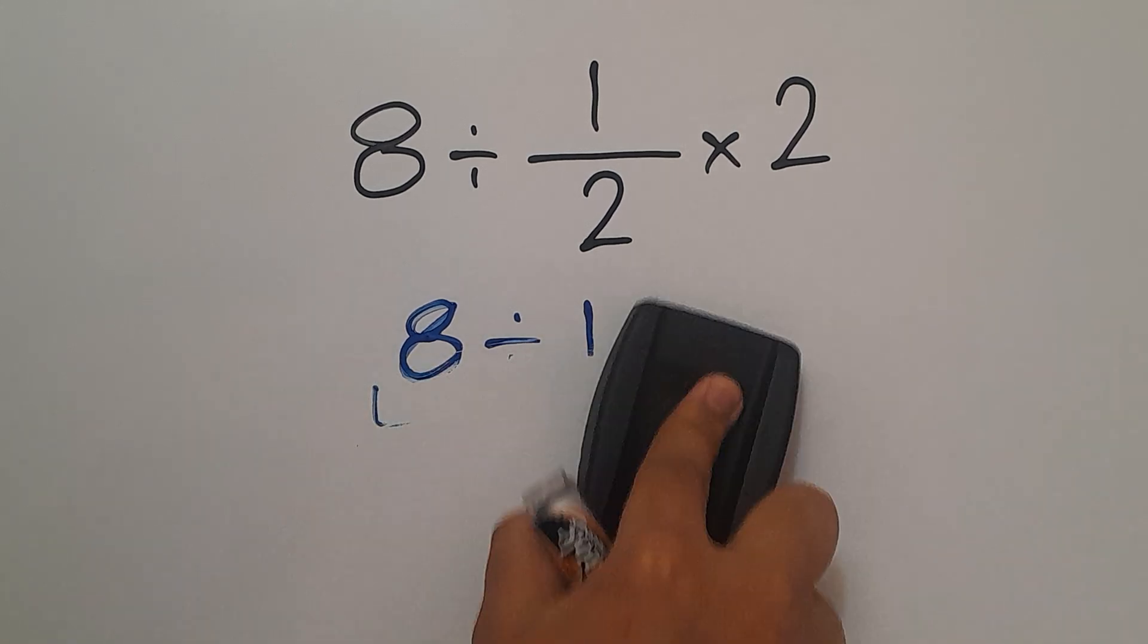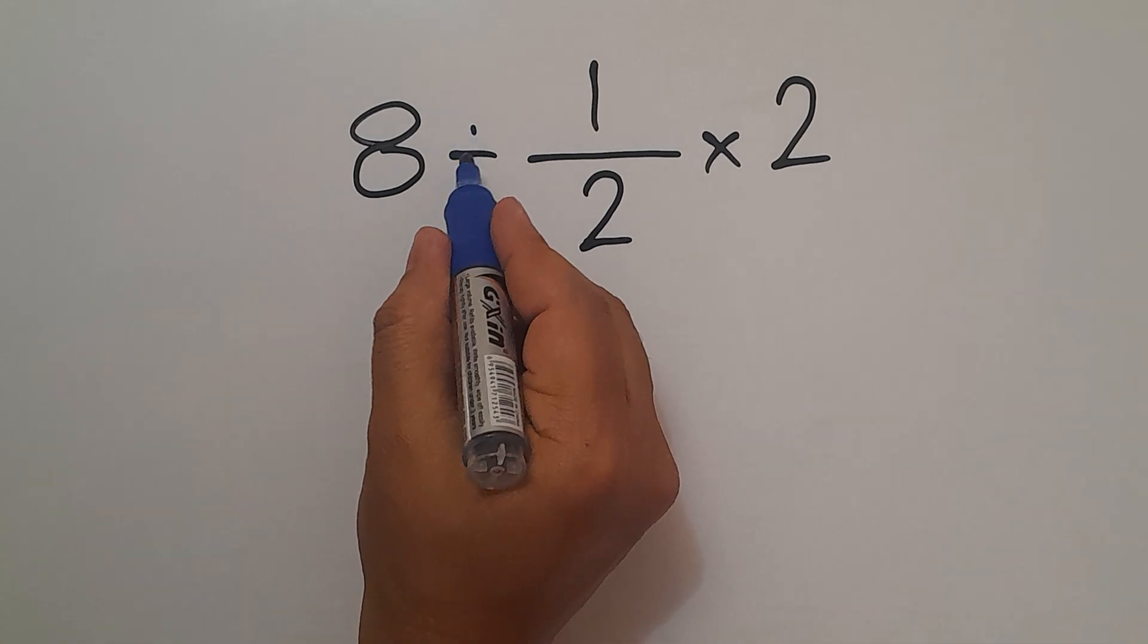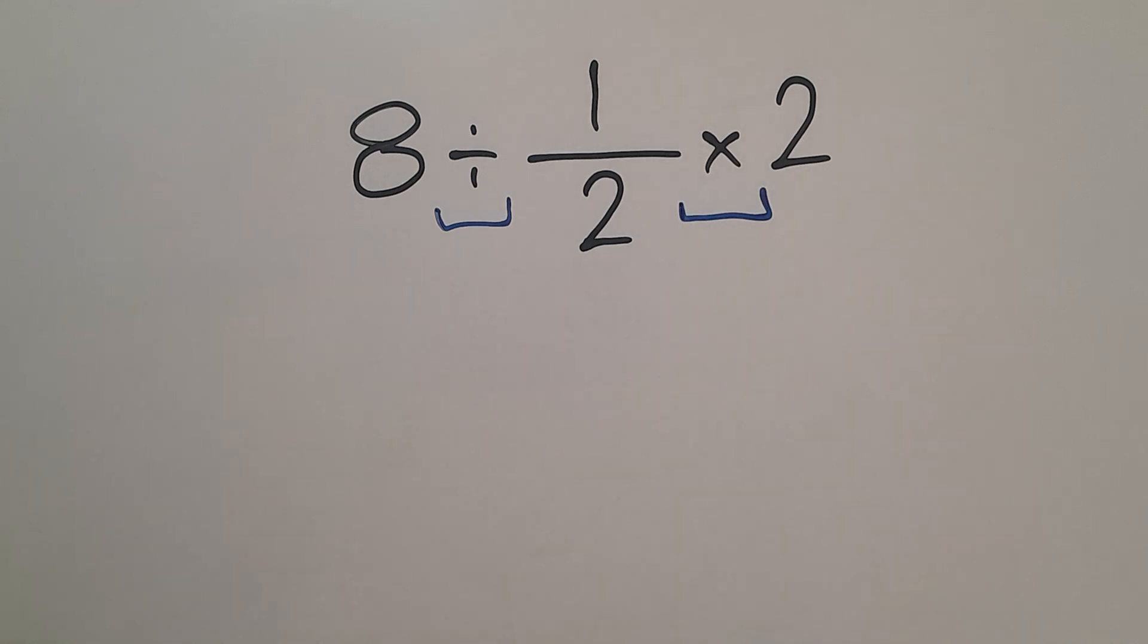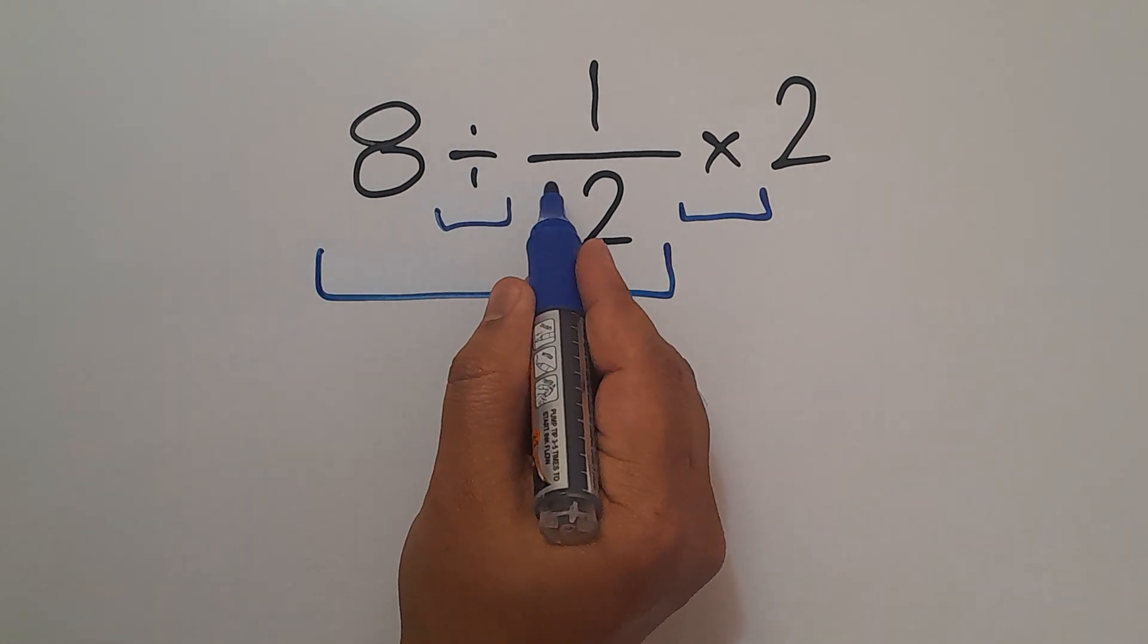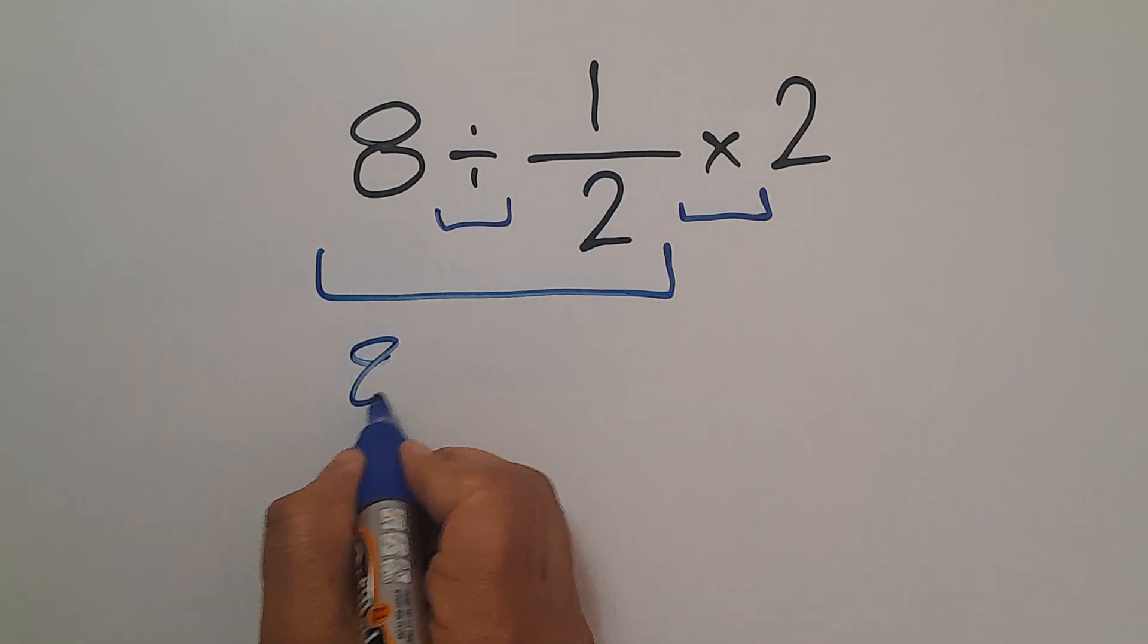Because according to PEMDAS we must do this division before this multiplication. So 8 divided by 1 over 2 equals...